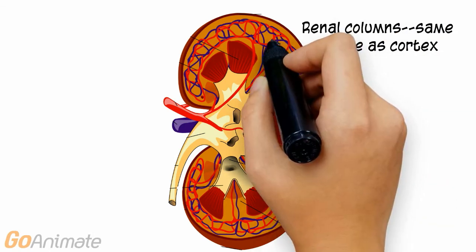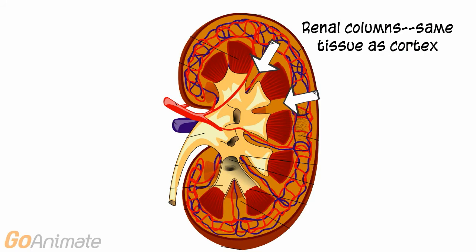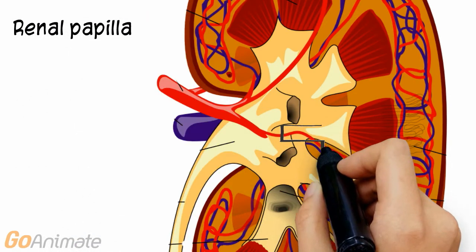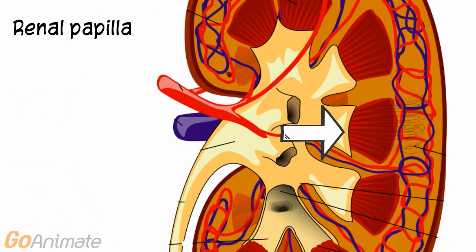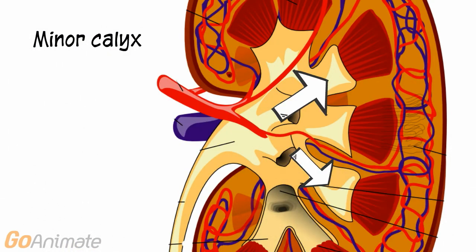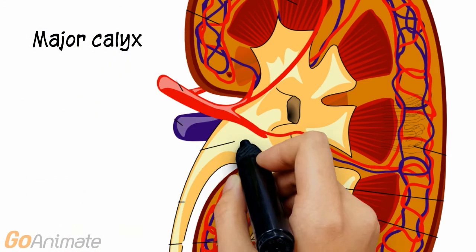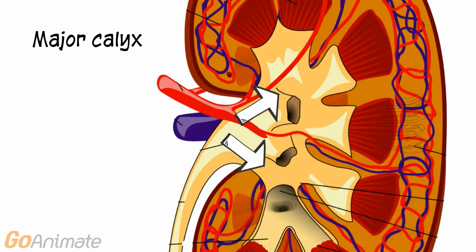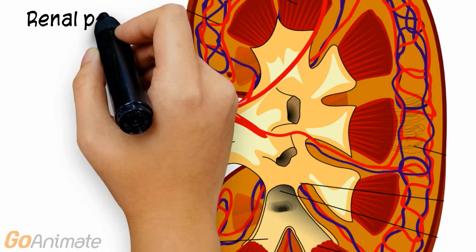Renal columns are located between the pyramids and contain the same tissue as the cortex. Each pyramid ends in a renal papilla. Urine drains from the renal papillae to the minor calyces, which combine to form major calyces, which in turn combine to form the renal pelvis.